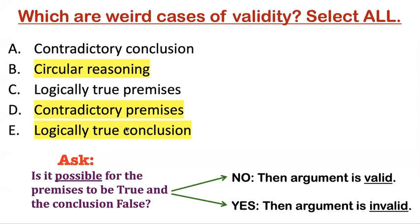The other two weird cases are D and E: contradictory premises and logically true conclusion. C is not one of the weird cases because here it is possible for the premises to be true and the conclusion false — after all, logically true premises are going to be true premises, so any argument with logically true premises and a false conclusion would be possible. That would be a possibly invalid example.